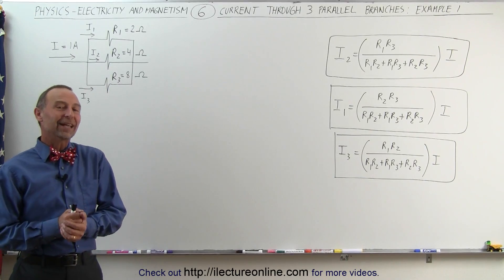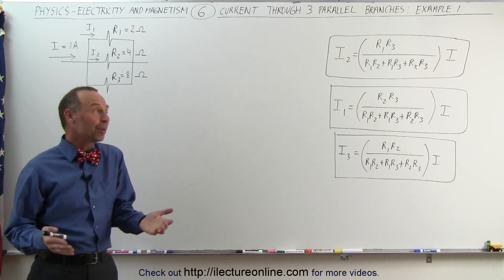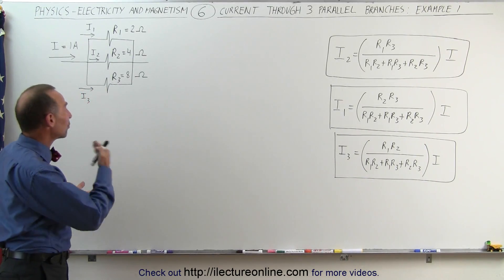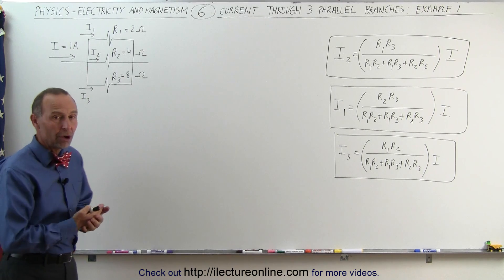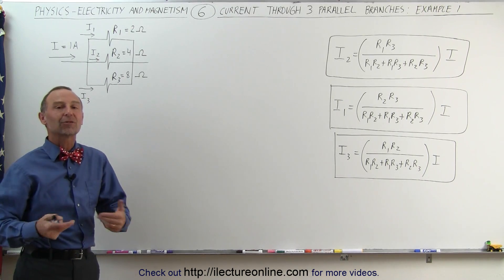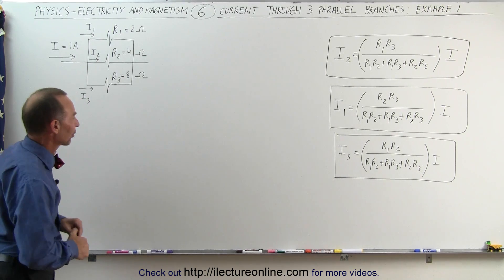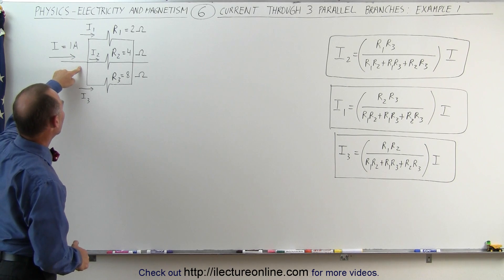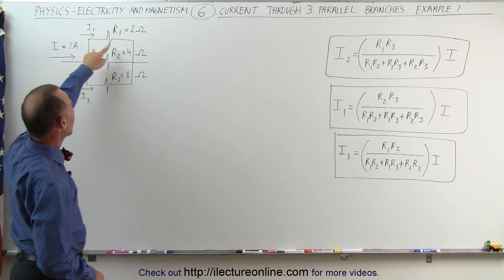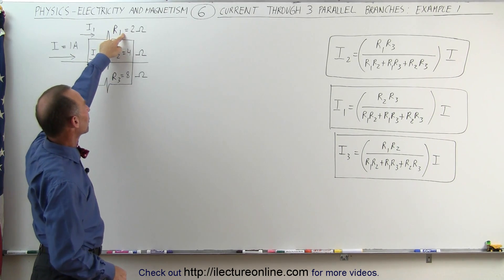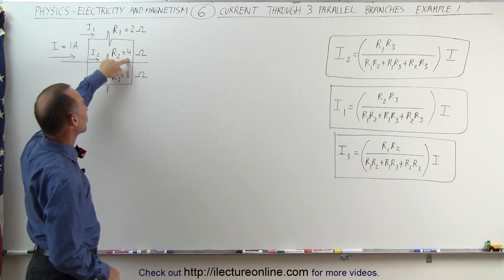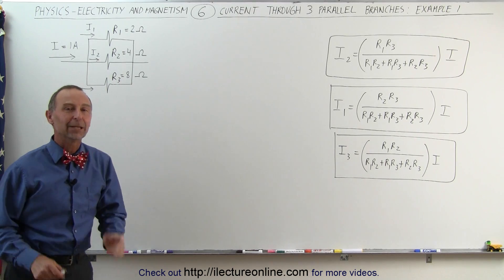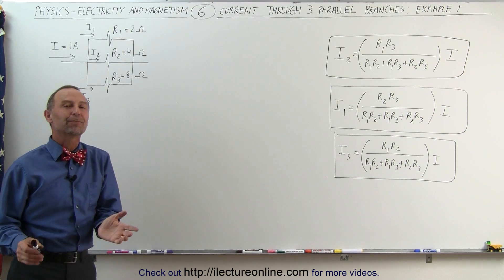Welcome to ElectronLine. Now let's do an example of how to calculate the current through each of the three branches of a three-branch multiple-branch circuit. We have one amp entering the branch point, a 2 ohm resistor in the top branch, a 4 ohm resistor in the middle branch, and an 8 ohm resistor in the bottom branch.